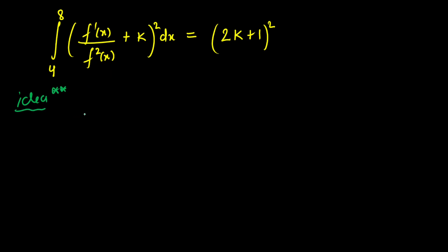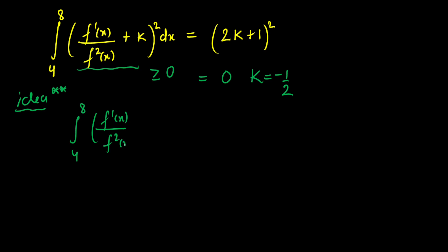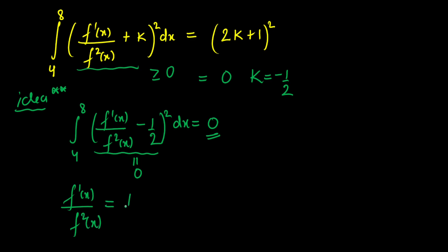This is the key idea that most students miss, which is why this question is really important. Since (2k+1)² is a perfect square, it is always ≥ 0, meaning this function is always above the x-axis. To make this integral equal 0, we set k = −1/2. For this value, the integration from 4 to 8 of [f'(x)/f(x)² − 1/2]² dx = 0. Since the integrand is 0, it means f'(x)/f(x)² must equal 1/2.